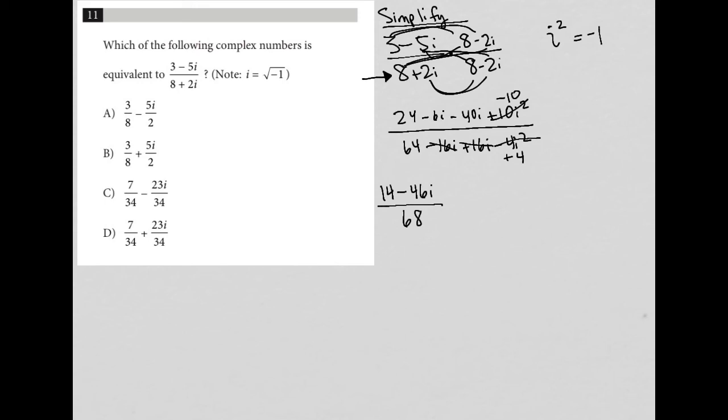Now I can reduce this fraction. I can easily tell that by the fact that they're all even numbers here. So I can divide everything by 2, which would leave me with 7 minus 23i divided by 34. So that's as far as I can reduce the fraction.